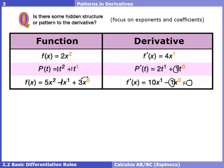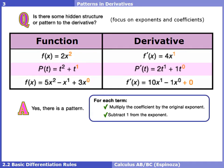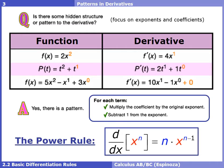This pattern leads us to what is called the power rule. We take the power and multiply it by the coefficient — with the invisible 1, 1 times n is n — and then subtract 1 from the power, which is why the power becomes n minus 1.